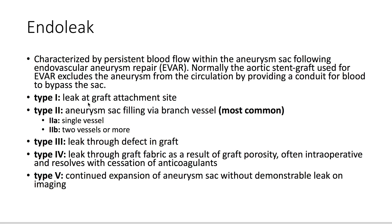Type 1 is a leak at the graft attachment site. Type 2 is aneurysm sac filling via branch vessels — the most common type — with 2a being a single vessel and 2b being two vessels or more. Type 3 is a leak through a defect in the graft. Type 4 is a leak through the graft fabric due to graft porosity, often occurring intraoperatively and resolving with cessation of anticoagulants.